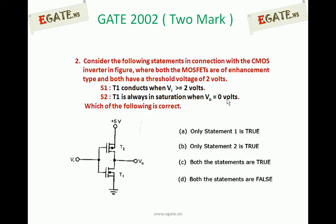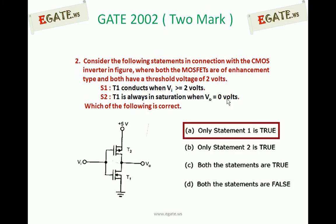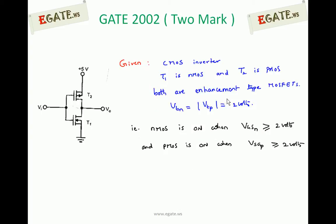The right option for the given question is: only statement 1 is true, that is T1 conducts when V input is greater than or equal to 2 volts. We will see the details now. This is the given CMOS Inverter, where T1 is the NMOS transistor and T2 is the PMOS transistor. For both, we are applying the same input signal, and both are enhancement type MOSFETs with a threshold voltage of 2 volts.